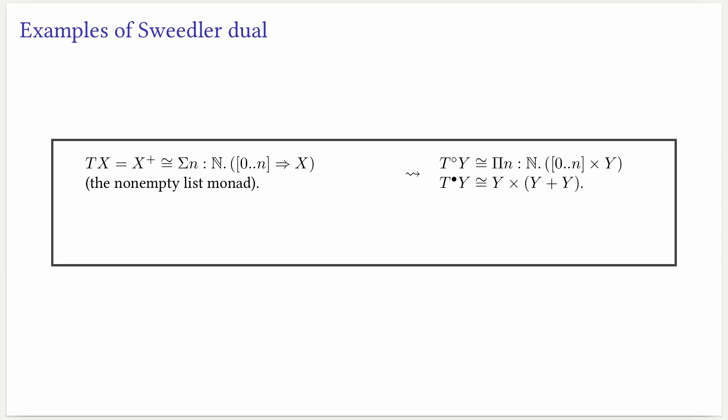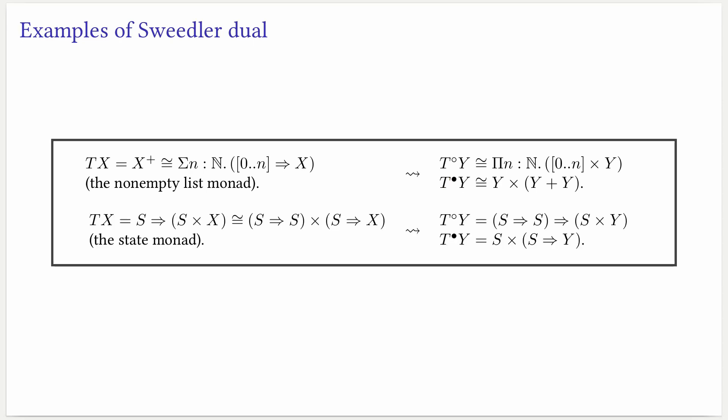We now see concrete examples of the Sweedler dual and how they differ from the standard dual. Take T to be the non-empty list monad, represented using dependent pairs. The dual of T will be given by dependent functions returning a number in the interval zero and above together with a y, while the Sweedler dual will simply be a pair together with a choice going left or right, together with the y. In the case of the state monad, the dual can be calculated by the rules we saw before, having the form of a function returning a pair of a state together with a y. In the case of the Sweedler dual, this is given by the costore comonad.